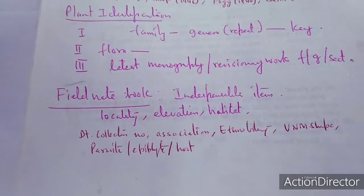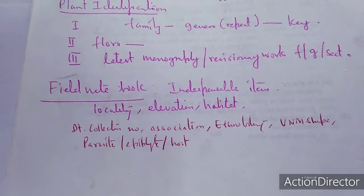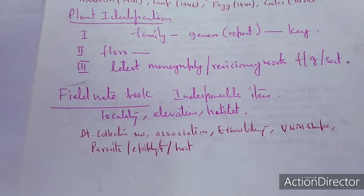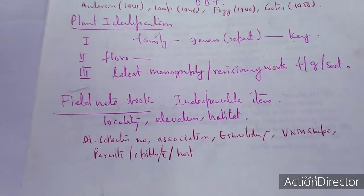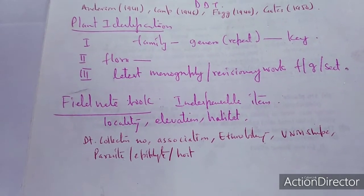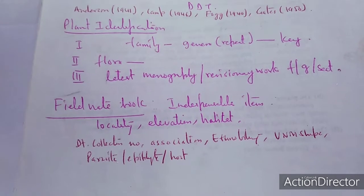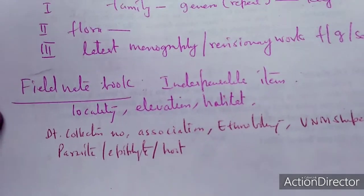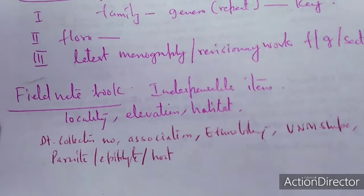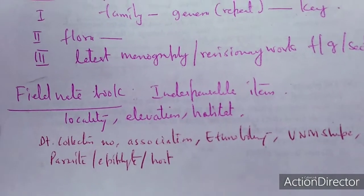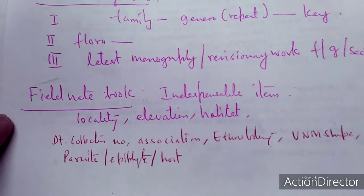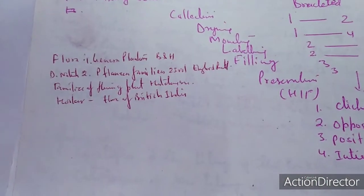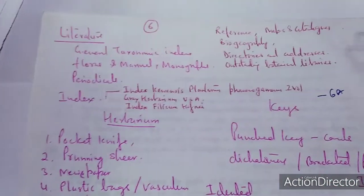If you are going to the forest, you must have a field notebook. The field notebook is an indispensable item because it records locality, elevation, habitat, and details associated with the plant collected. It also records the date of collection, collection number, associations, ethnobotanical importance, the shape of collection — V-shape, N-shape, M-shape — and whether the plant is a parasite, epiphyte, and what type of host is there. This information is collected in the field notebook.